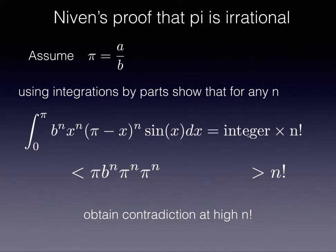This actually cannot be true. So it looks like a harmless equation, but it actually leads to a contradiction. So the function on the left that we are integrating from 0 to pi is always positive, as can be easily seen. Meaning that this integral is positive, so this means that the right-hand side has to be positive and actually bigger than n factorial.